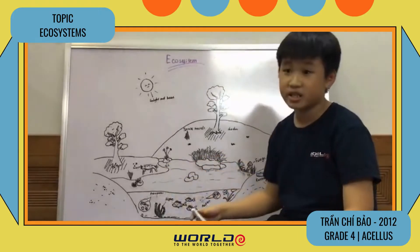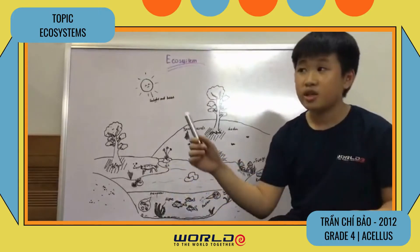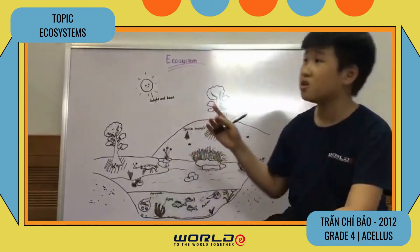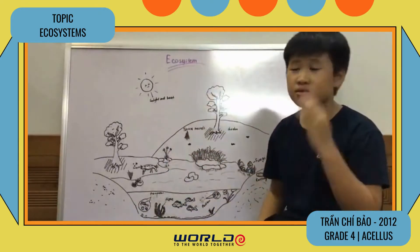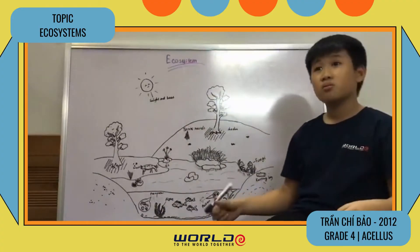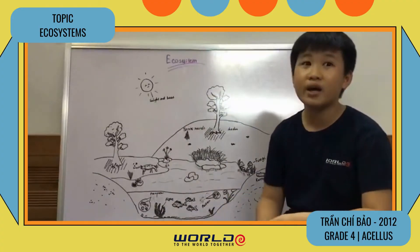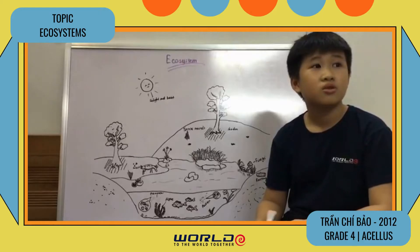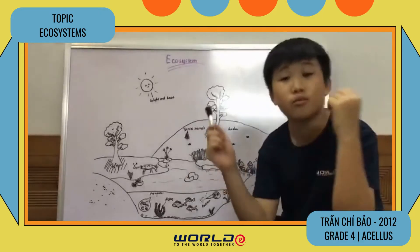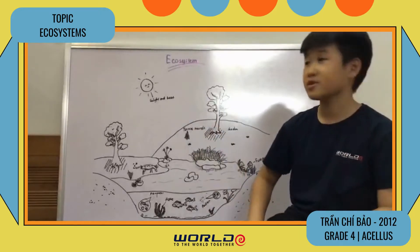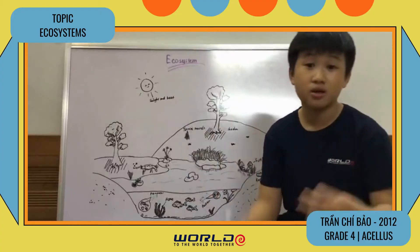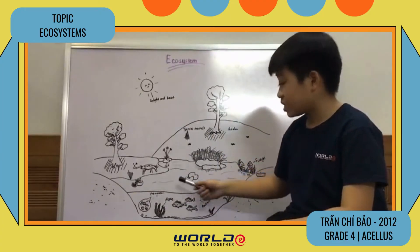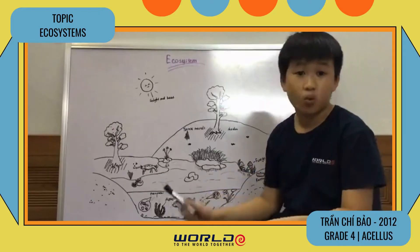This is a deer, and here are insects. There are many, many insects in our nature, like mosquitoes, beetles, butterflies, bees, and many more - I can't name all of them because there are too many.